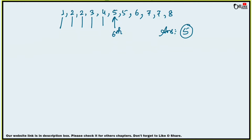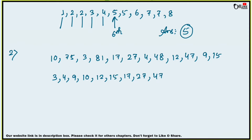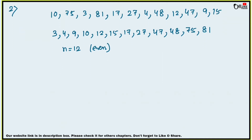Now next, number two: for the following set of numbers, find the median. The numbers are 10, 75, 3, 81, 17, 27, 4, 48, 12, 47, 9 and 15. Arrange in ascending order: 3, 4, 9, 10, 12, 15, 17, 27, 47, 48, 75, 81. There are 12 numbers, so n equal to 12, which means even.